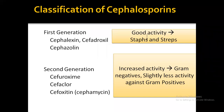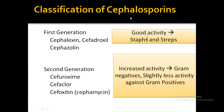Cephalexin is an orally available drug. It has good activity against Staphylococcus and Streptococcus. The first generation drugs are basically acting on gram-positive organisms.